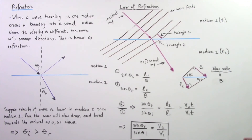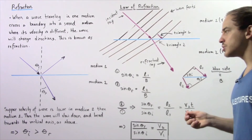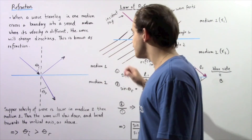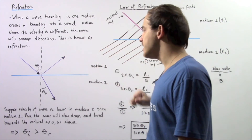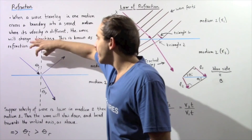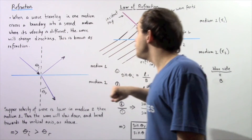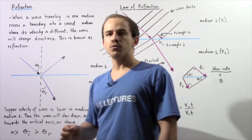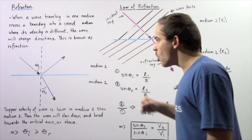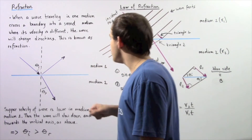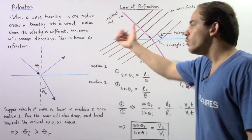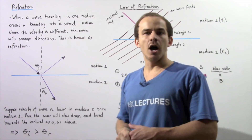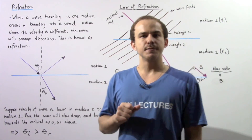This result is commonly known as the law of refraction. If we know the velocity of the ray in medium one and medium two, and we know the angle of incidence, we can use this equation to calculate the angle of refraction. Likewise, if we know both angles and one of the velocities, we can determine the other velocity of the wave in that specific medium.